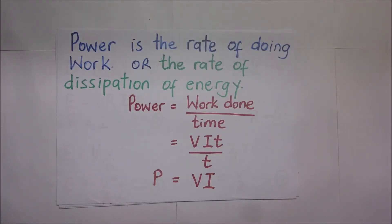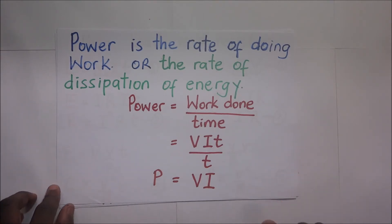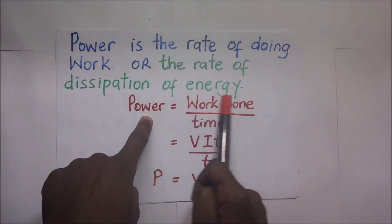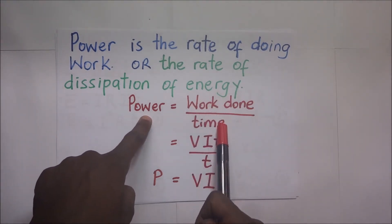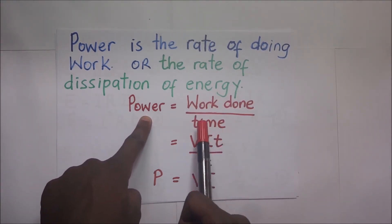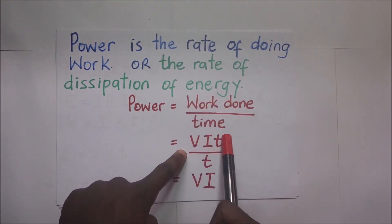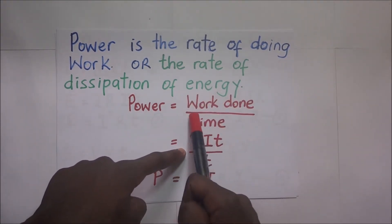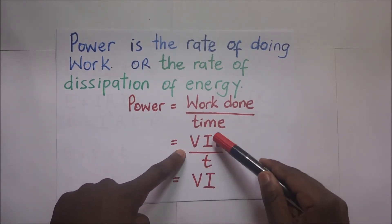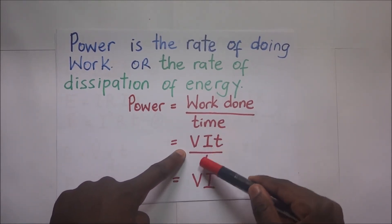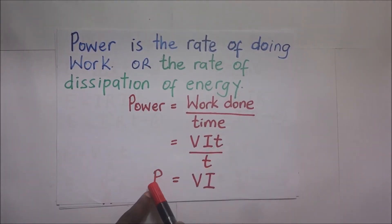By definition, power is the rate of doing work, or the rate of dissipation of energy. Power equals work done divided by the time taken: P = VIT divided by T. The T cancels with T, and we are left with power equal to V times I, so P = VI.